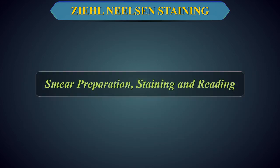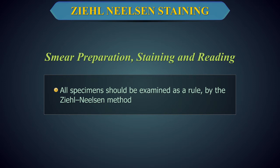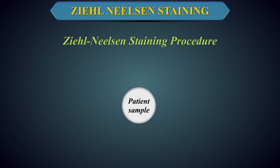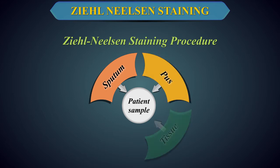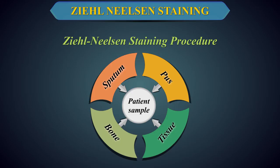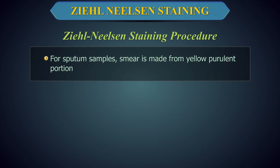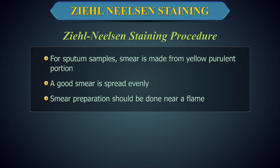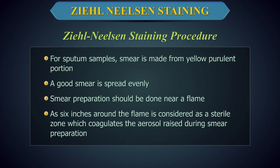Smear preparation, staining, and reading. All specimens should be examined in the nearest designated Microscopy Centre, as a rule by the Ziehl-Neelsen method. Smear preparation is similar to that of Gram's stain. The patient sample is sputum; in cases where TB other than pulmonary TB is suspected, samples such as pus, tissue, or bone can also be taken. For sputum samples, the smear is made from the yellow purulent portion of the sputum using a broomstick or a sterilised nichrome wire loop. A good smear is spread evenly and is neither too thick nor too thin. Smear preparation should be done near a flame, as the six inches around the flame is considered a sterile zone which coagulates the aerosol raised during smear preparation.